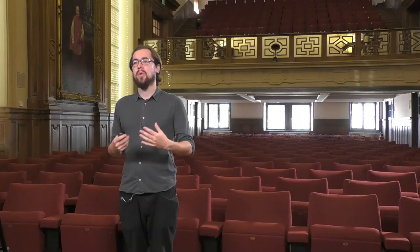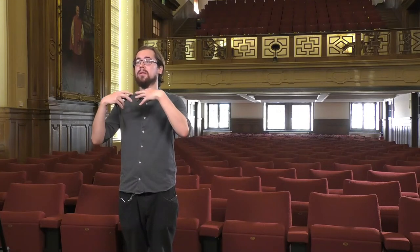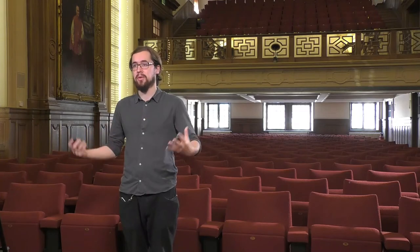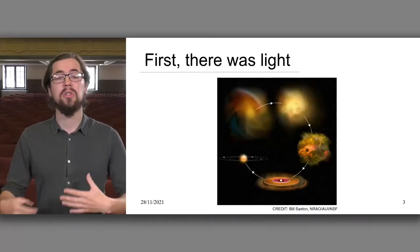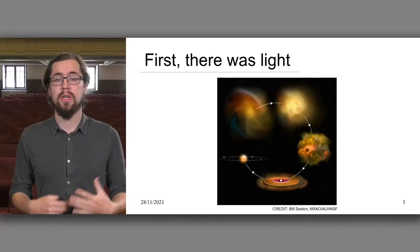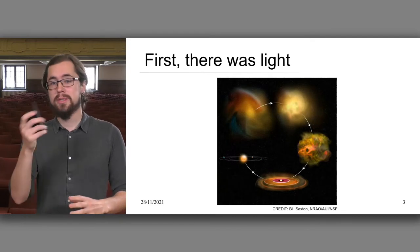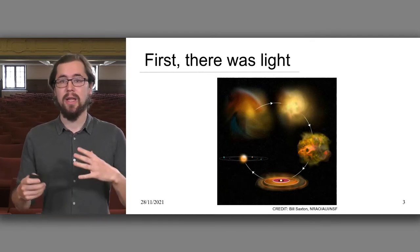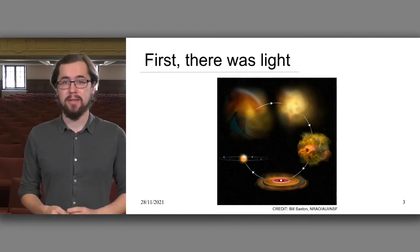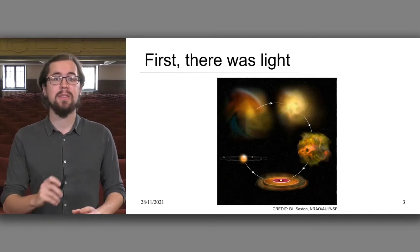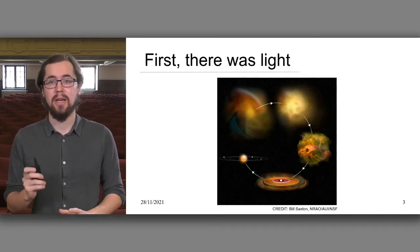There is a cycle: at one point the star in the middle will burn out, it will die, and it will give its material back to the universe from which new stars and new planets can be born. The pictures you see here are just abstract artist's impressions, but we can actually see all of those stages in our night sky.